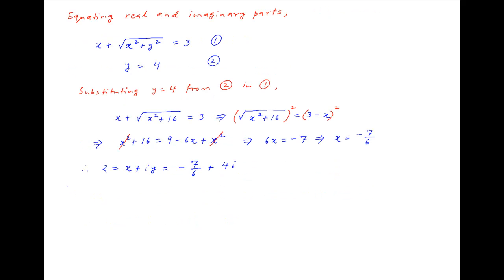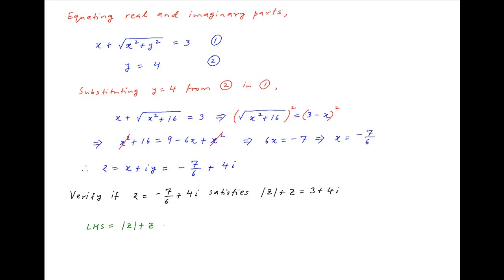Next, we will verify if this solution z is equal to minus 7 upon 6 plus 4i satisfies the original equation, which is absolute value of z plus z is equal to 3 plus 4i. Substituting z is equal to minus 7 upon 6 plus 4i, the left-hand side is equal to the square root of minus 7 upon 6 whole squared plus 4 squared, plus minus 7 upon 6 plus 4i.